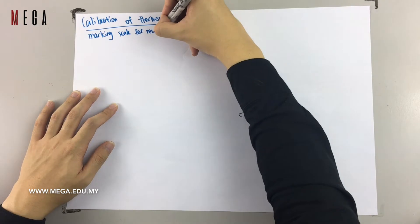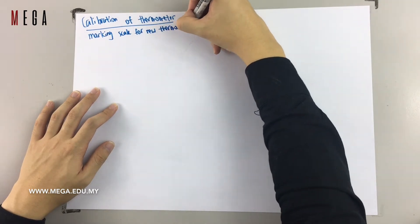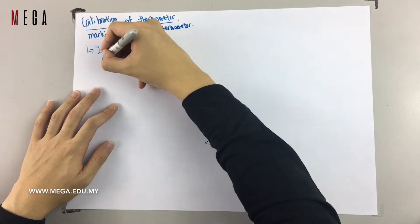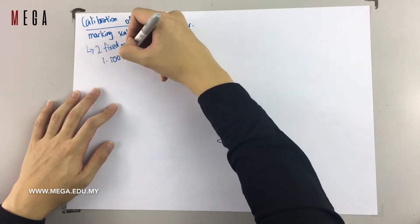Calibration of thermometer actually means when you are marking up the scale for a new thermometer. So first of all, in this process you will need to find two lengths of the fixed points.